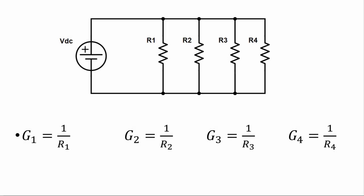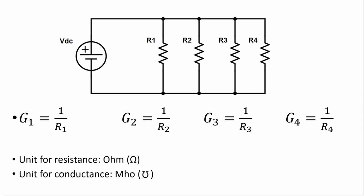Conductance is the opposite or inverse of resistance. The symbol for conductance is G, and so for this circuit, the conductance of the first resistor is G1 equals 1 over R1. The unit for resistance is the ohm, and historically the unit for conductance was the mho, which is ohm spelled backwards. But now the units are Siemens.